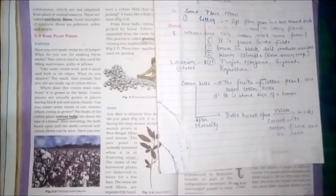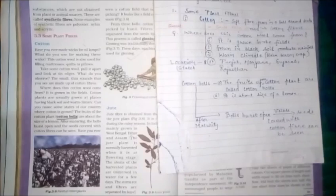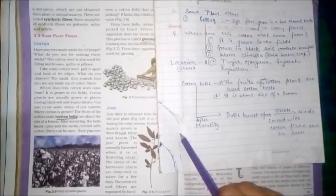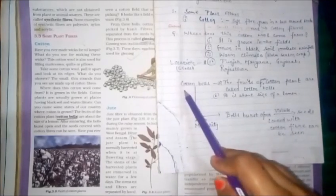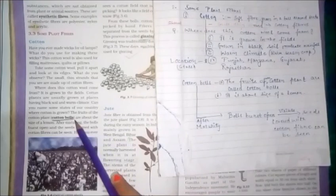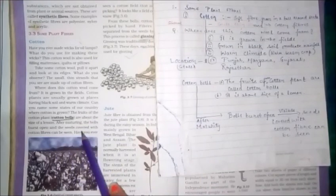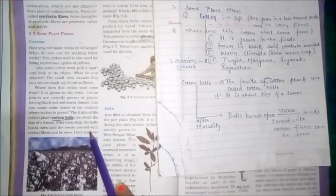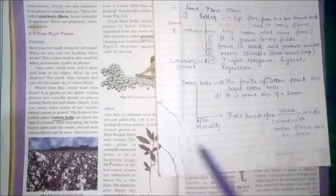They are grown in black soil and moderate rainfall. The areas or states where cotton crops are grown are Punjab, Haryana, Gujarat, and Rajasthan. The fruits of the cotton plant are about the size of a lemon, and the fruit of the cotton plant are also cotton balls.